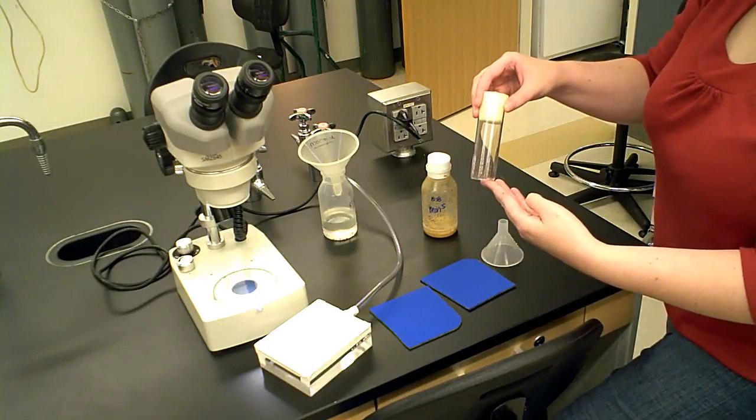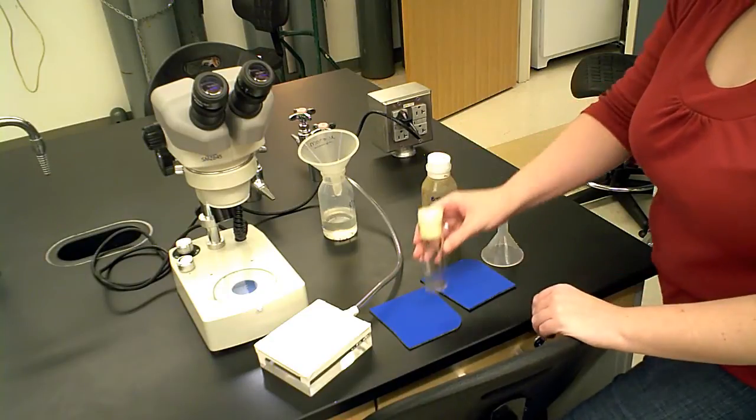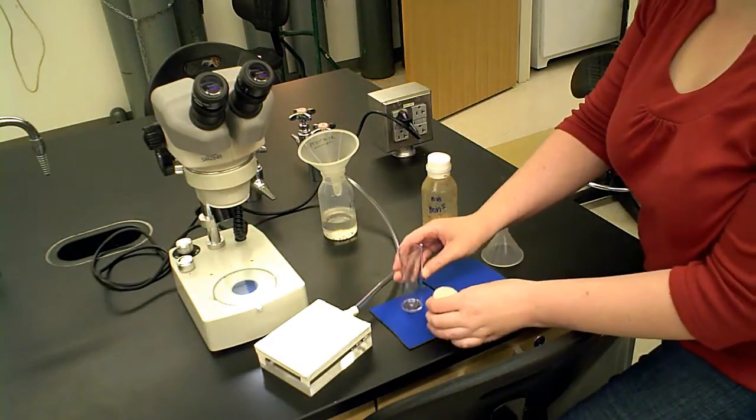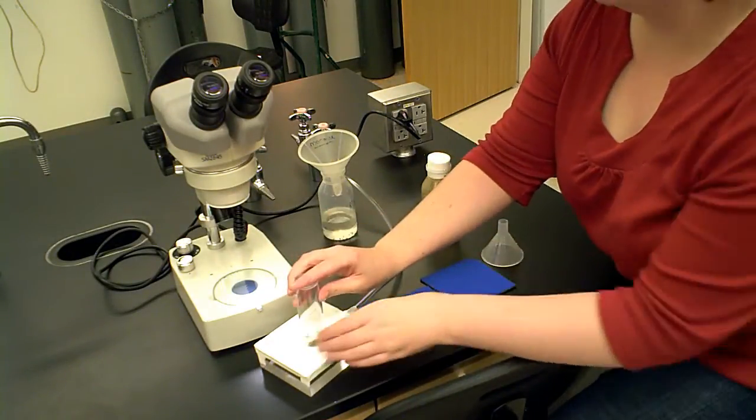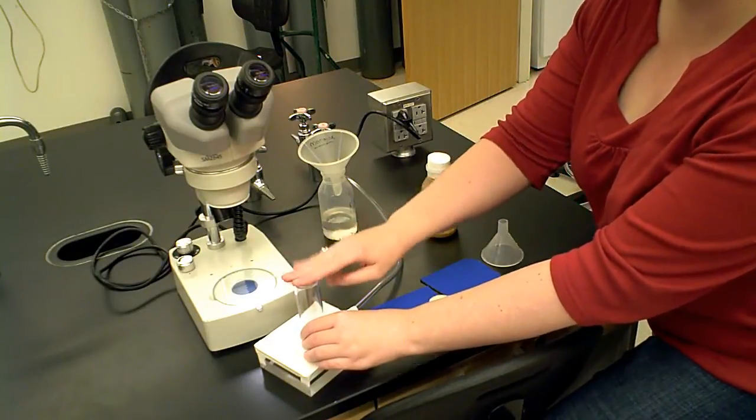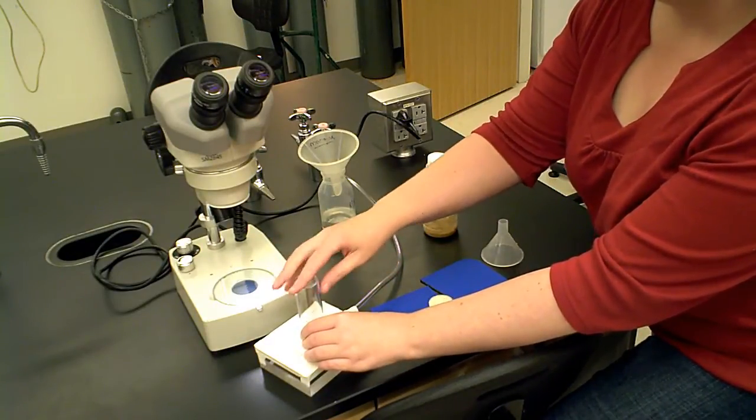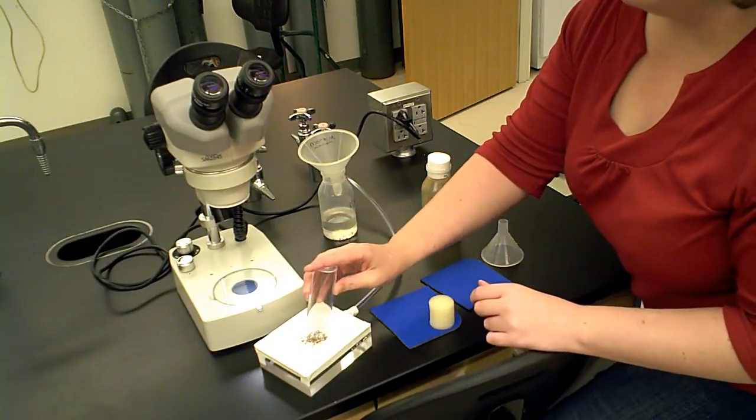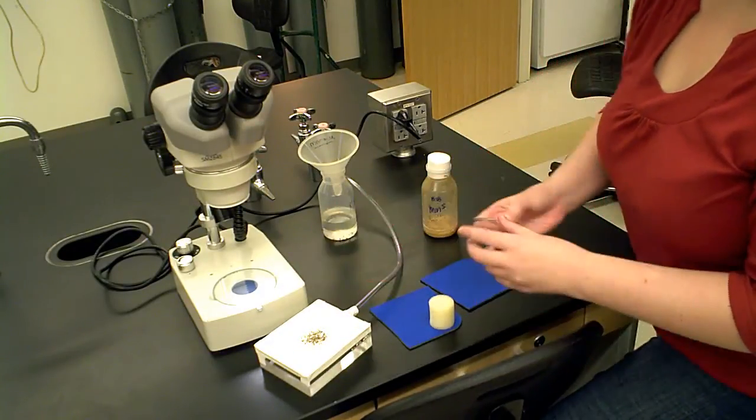Here you have a holding vial worth of flies. If you'd like to gas them on the CO2, lightly tap them down and quickly turn them over onto the CO2 pad with the CO2 already running. Gently tap them until the CO2 has knocked them unconscious.